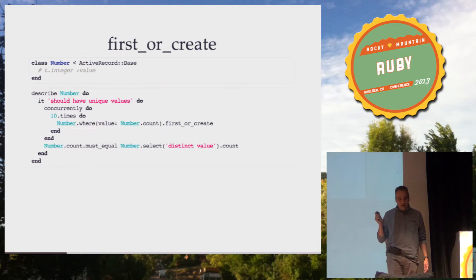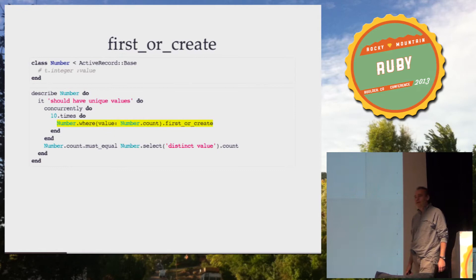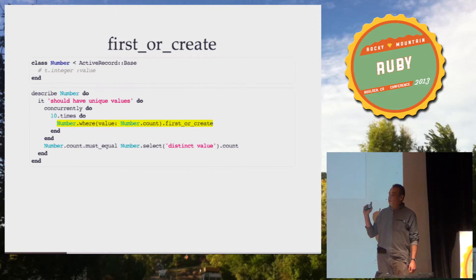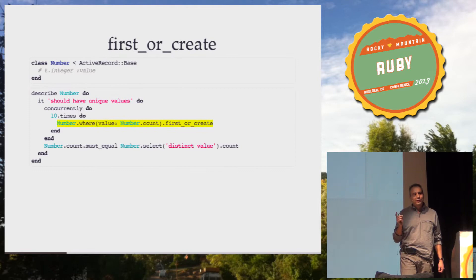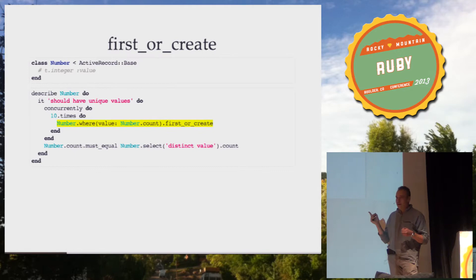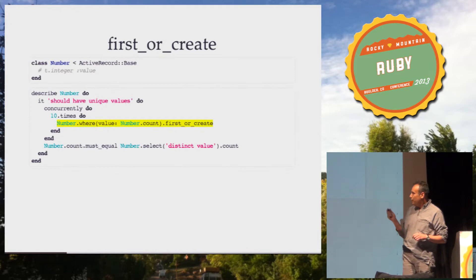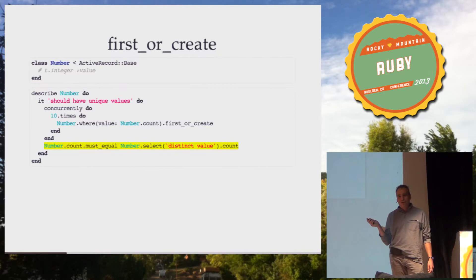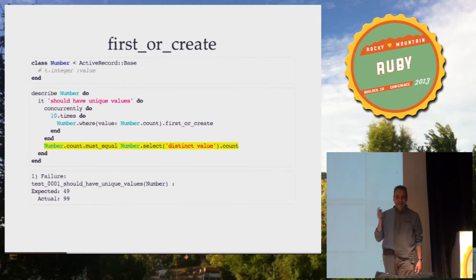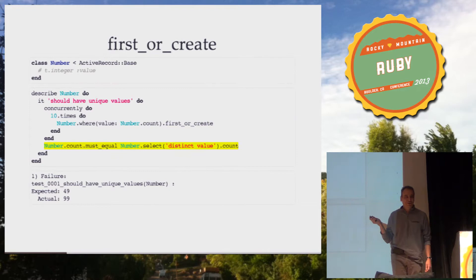We will ask our processes to create a record corresponding to the current size of the table. The key issue when testing for concurrency is to try to guarantee that your processes collide as much as possible. The size of the table is used as a simple synchronization mechanism. At the end, we compare the number of unique values in our table with the number of records. We run our test and get 50 non-unique records out of 99 that we managed to create.